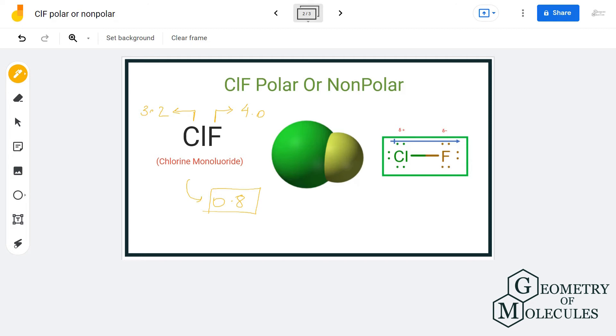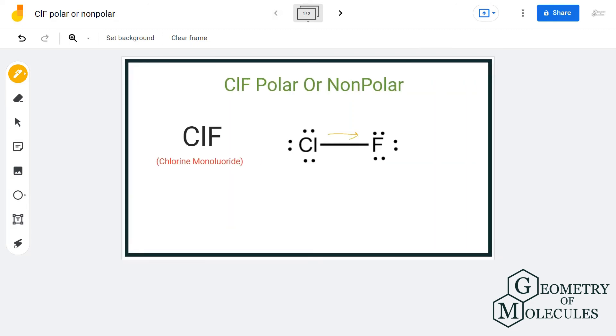The bond between chlorine and fluorine is a polar bond. As a result, there will be a dipole moment toward the fluorine atom. Since this dipole moment is not cancelled out, poles will form in this molecule.